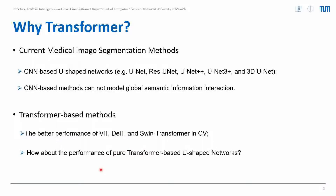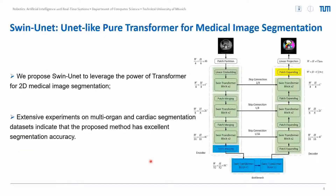So we want to design a Pure Transformer-based U-Shape network to perform medical image segmentation. We propose SwingUnit to leverage the power of transformers for 2D medical images. It consists of an encoder, bottleneck, decoder, and skip connections. The encoder, bottleneck, and decoder are all built based on Swin Transformer blocks.